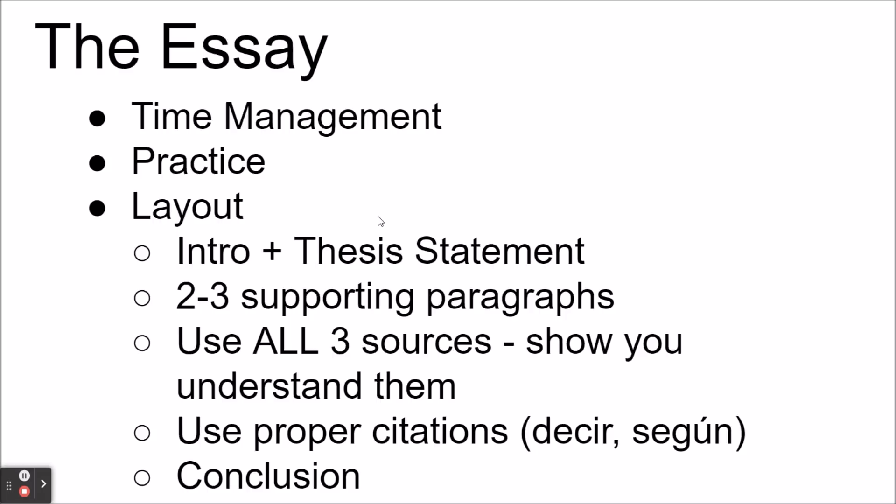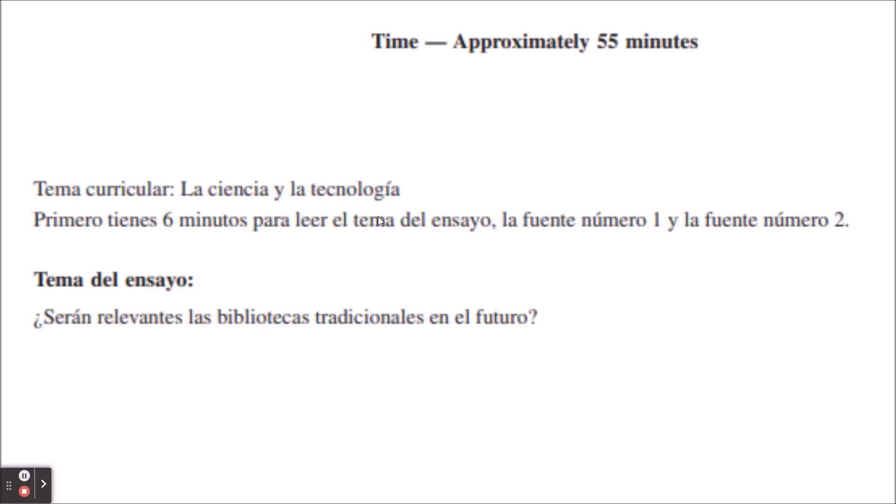You have to show that you understand those sources. Cite them properly — you can do a direct quotation, or use 'según' (according to) and then summarize their words in your own words. Wrap it up with a conclusion. For this example, the time is approximately 55 minutes; the theme is science and technology. First, you have six minutes to read the theme and the first two sources. The essay theme is: 'Will traditional libraries be relevant in the future?'